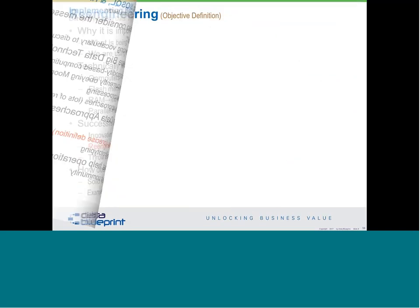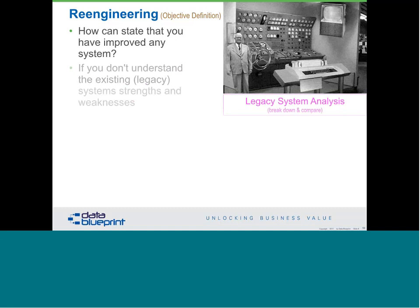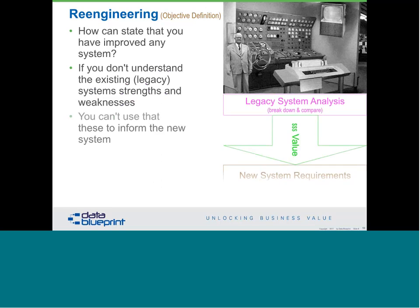Then we want to get into a concept that is near and dear to my heart. This is Licklider sitting in front of what he believed the home computer of the future would look like. Every time you do a reengineering search, the first question is: how can you state that you've improved any system if you don't understand the legacy system's strengths and weaknesses? Everybody's going to have some good stuff and some bad stuff. We want to know what the differences are because we want to keep the good stuff and try to improve the bad stuff. The value proposition is making sure we do understand that and couple it with new pieces.